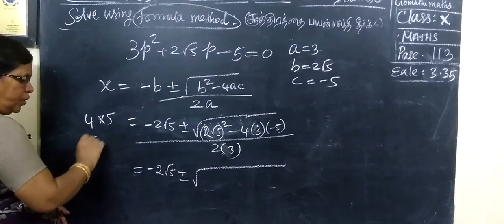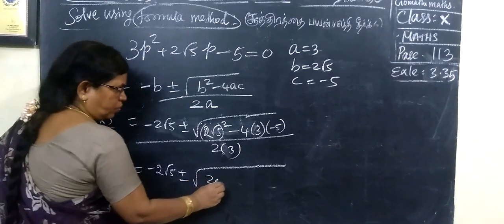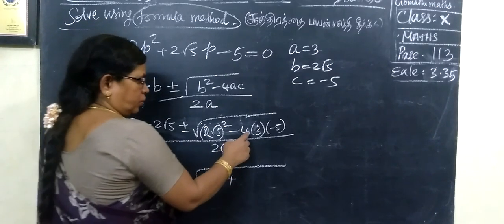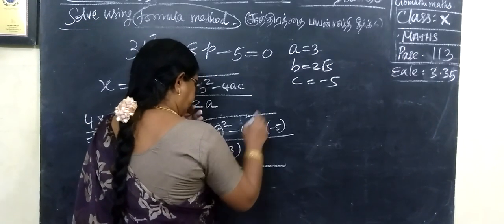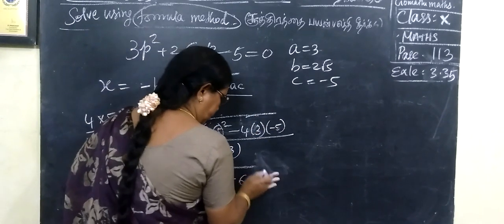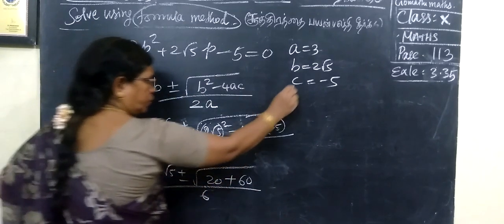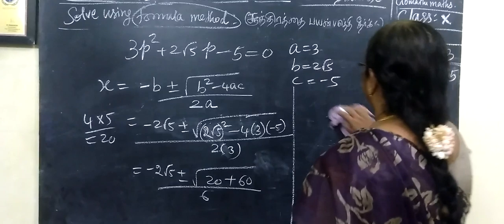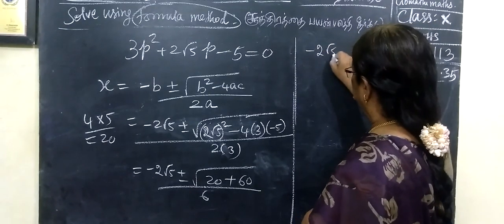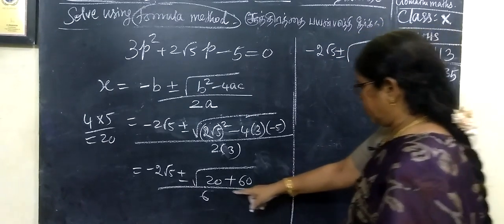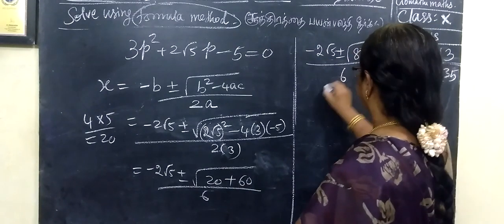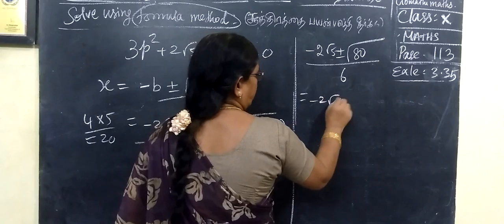Equal to minus 2 root 5 plus or minus: 2 squared upon 4, root 5 squared upon 5. So, it is 20. 20 into 3 is 60, then by 6. Here, minus 2 root 5 plus or minus root of — if you add it, 80 by 6.